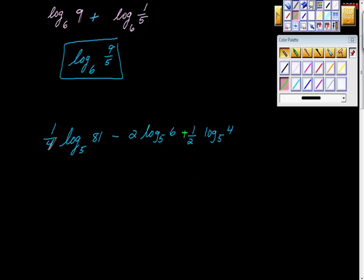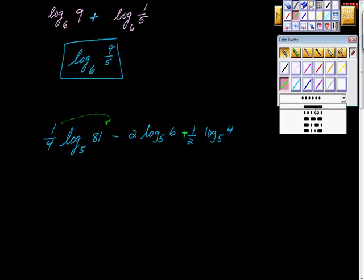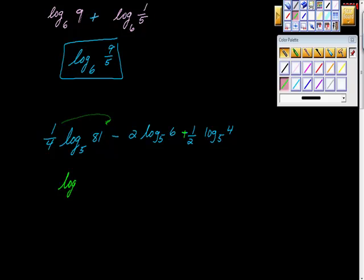Now we'll do some quick work here. First thing we're going to do is take this to the 1 fourth power, and 81 to the 1 fourth power is 3. That gives us log base 5 of 3, because the fourth root of 81 is 3. Minus, and then I'll take this, bring this up to here, so that will give us minus log base 5 of 36, right. 6 squared is 36.